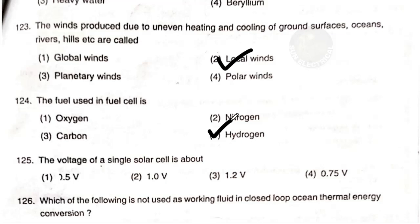The voltage of a single solar cell is: option 1 0.5 volt, option 2 1.0 volt, option 3 1.2 volt, option 4 0.75 volt. The answer is option 1 — 0.5 volt. A single solar cell produces approximately 0.5 to 0.6 volts.